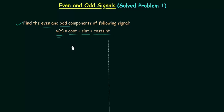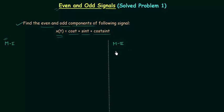There are two ways to solve this problem. In the first method we will perform time reversal or folding, and in the second method we will use the properties of even and odd signals. Method 1 is for your university semester exam. Method 2 is a shortcut method based on properties learned in the last lecture, and is for competitive exams like GATE, IES, etc.